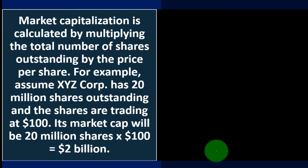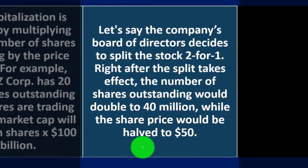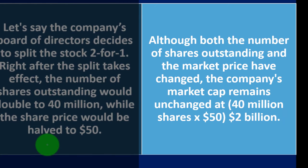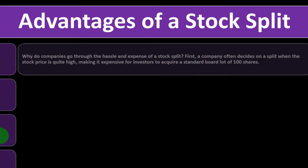Market capitalization is calculated by multiplying the total number of shares outstanding by the price per share. For example, assume XYZ Corp has 20 million shares outstanding trading at $100 — its market cap is $2 billion. If the board decides to split the stock two-for-one, shares outstanding double to 40 million while the share price is halved to $50. Although both numbers have changed, the company's market cap remains unchanged at $2 billion.